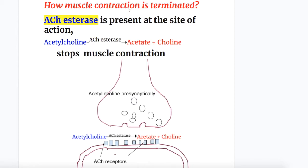Muscle contraction is terminated by acetylcholinesterase enzyme, which is present at the site of action. Acetylcholinesterase hydrolyzes acetylcholine into acetate and choline to stop muscle contraction. As long as acetylcholine is attached to the receptor, contraction continues. Acetylcholinesterase breaks down acetylcholine and stops the muscle contraction.